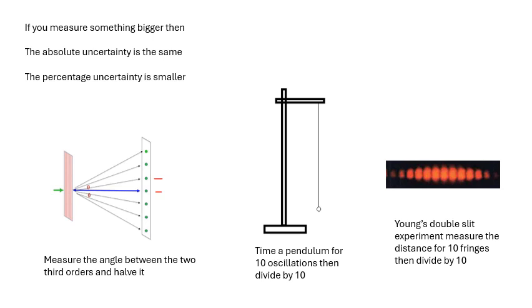What you could do - in fact what you should do - is measure the angle between, let's say here you've got two third orders there, if you measure that angle between them and then divide by two and then work it out for the third order, and that will give you a better answer. Yeah, there will be less uncertainty. If it's plus or minus one degree, then the percentage uncertainty will be a lot smaller.